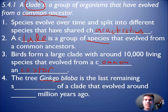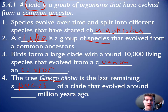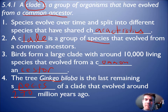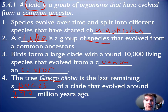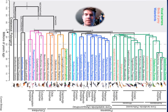Ginkgo trees are pretty cool. They belong to a clade that first started evolving about 270 million years ago — the time of the dinosaurs — and it's still here, just that one species. You see them every once in a while; they have very distinctive leaves. That's on a slide coming up, but just to show you — this will be a clade, coming from this common ancestor.